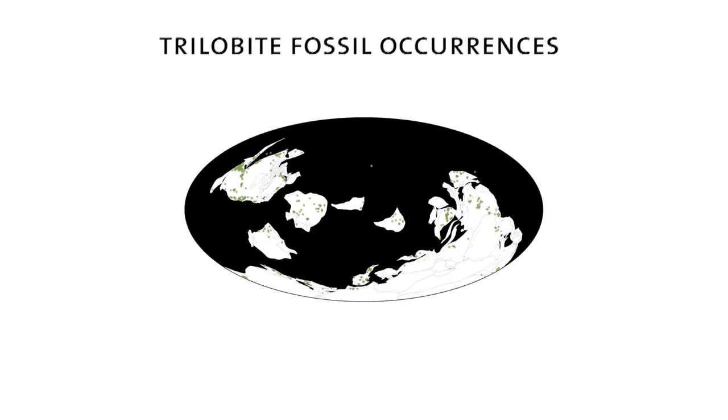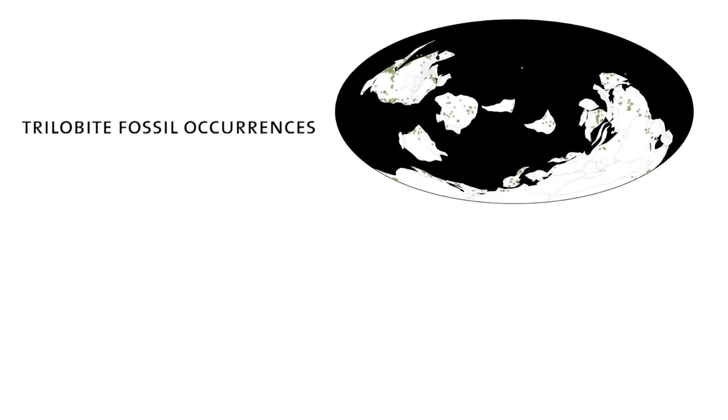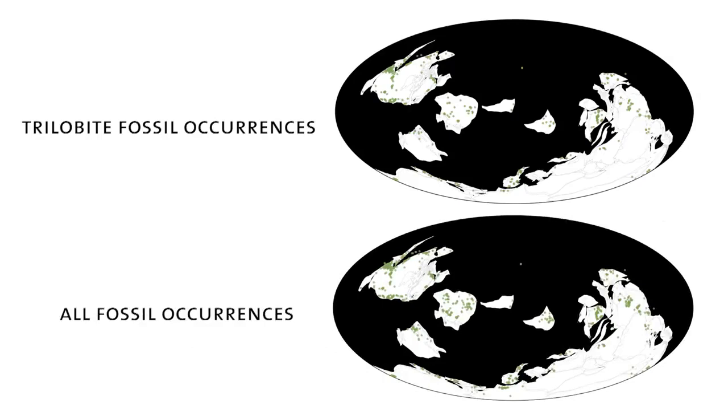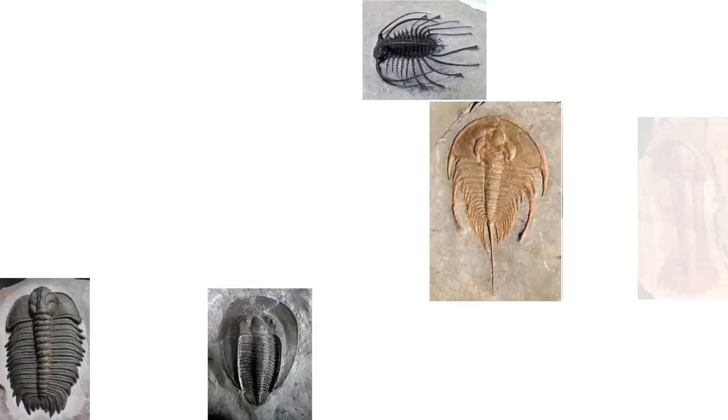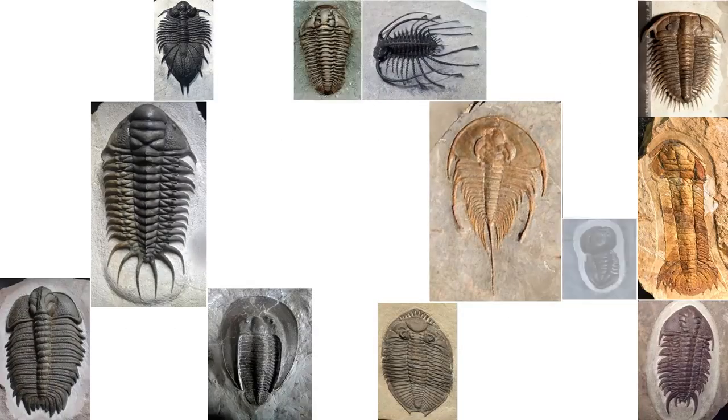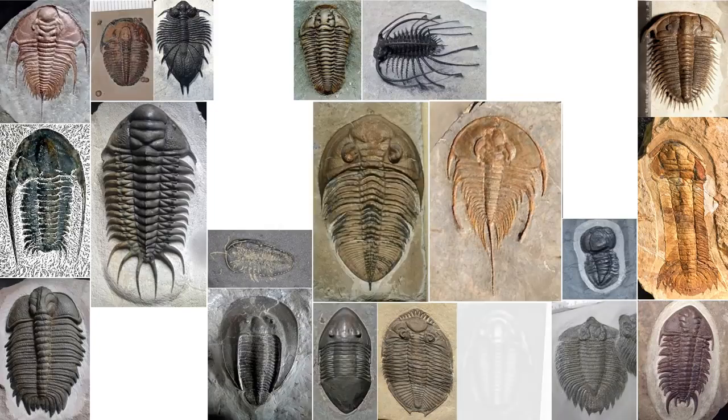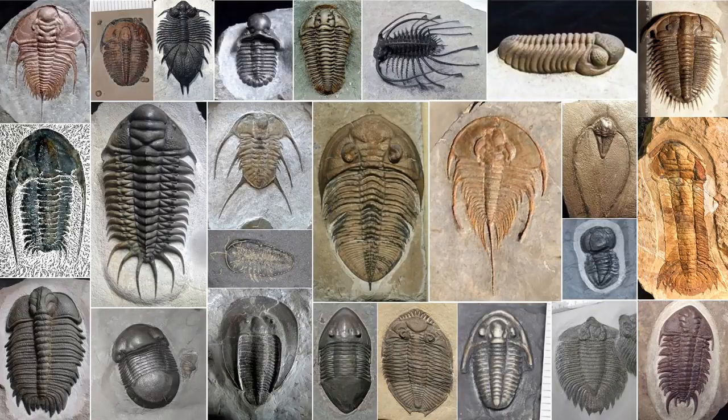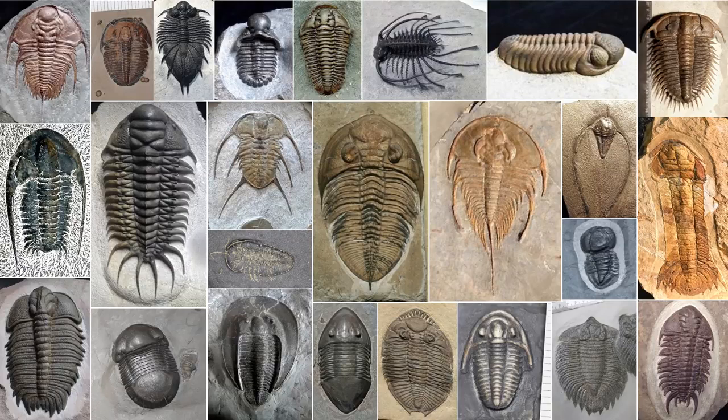And we can see this actually quite clearly if we compare the trilobite occurrences during the Cambrian to all the other fossil occurrences. Both at the local level and at the global level, they were very abundant and diverse. This is just a selection of Cambrian trilobites from around the world. And this diversity that they already were starting to accumulate in the Cambrian, they carried with them through much of their evolutionary history.